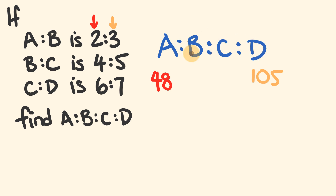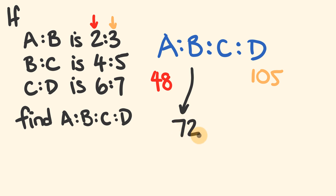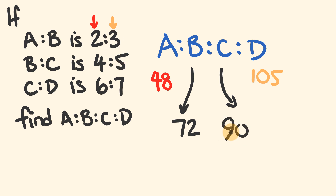For b, the pattern is b times b times c: so 3 times 4 times 6. 3 times 4 is 12, times 6 is equal to 72. For the c part, we do b times c times c: so 3 times 5 times 6. 5 times 6 is 30, times 3 is equal to 90. And there you have it: our ratio is 48 is to 72 is to 90 is to 105.